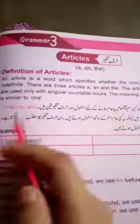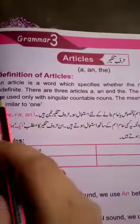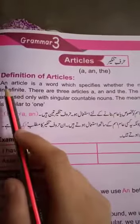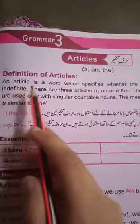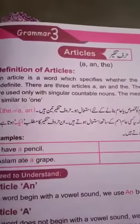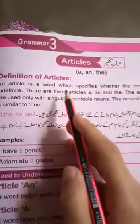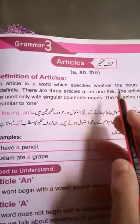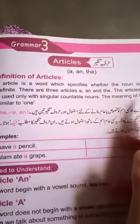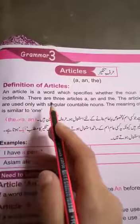Articles mean rufay tanqir. The definition of articles: an article is a word which specifies whether the noun is definite or indefinite.